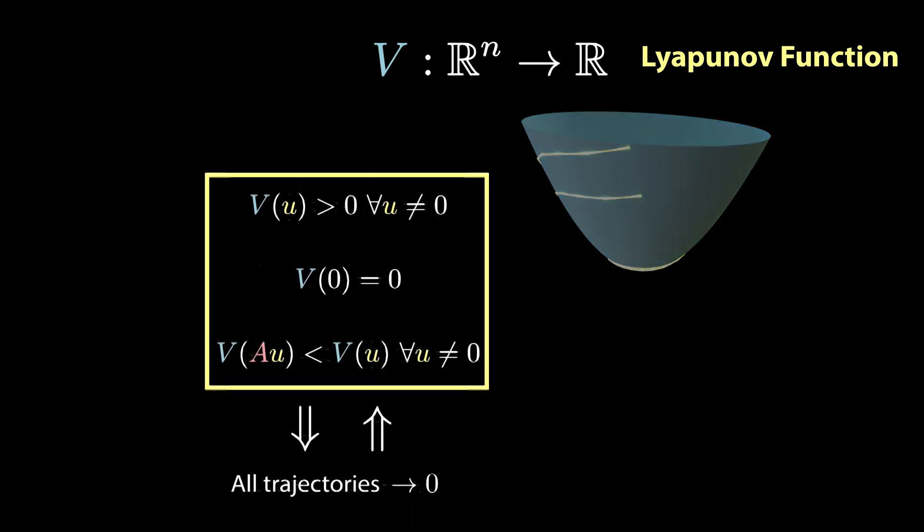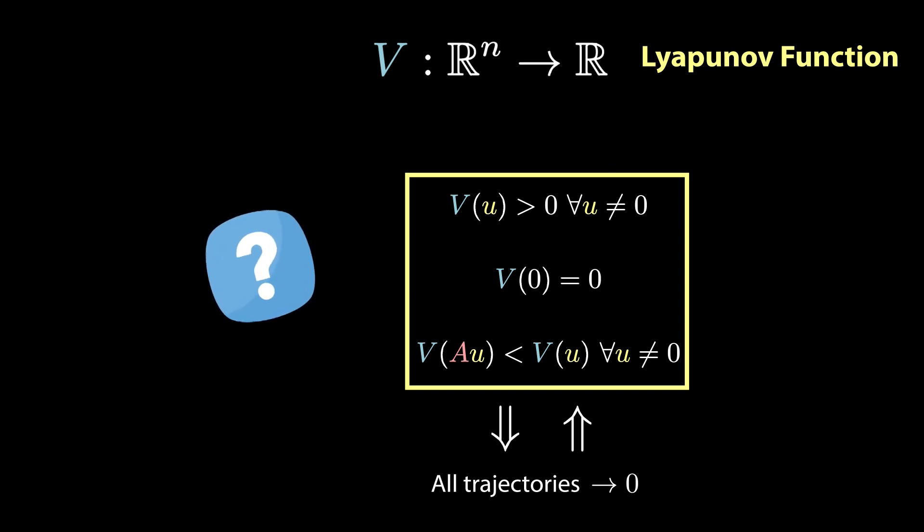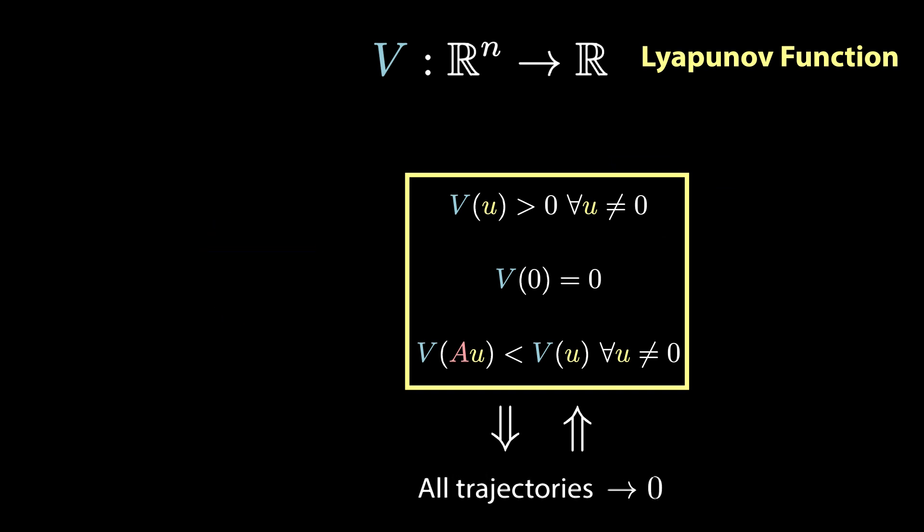This is great and all, but how is this helpful? It's true that we have reduced the problem of testing stability to testing whether a Lyapunov function exists or not. But practically, how do we find such a Lyapunov function in the first place? If anything, maybe finding such a function is a much harder task than solving the problem we started with. And this is where the time we spent on semi-definite programming will pay off, so bear with me for a second.